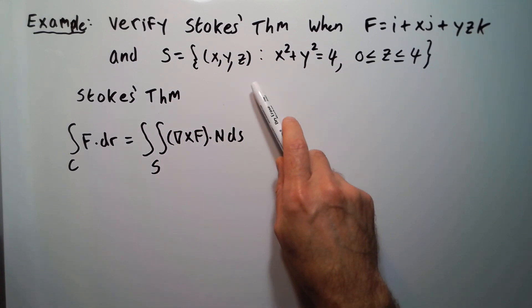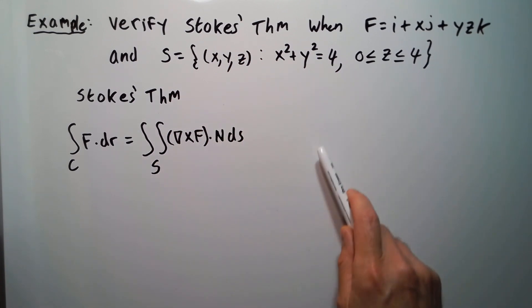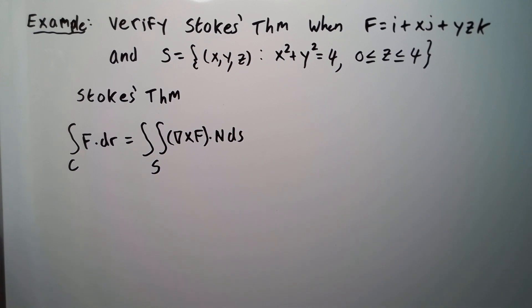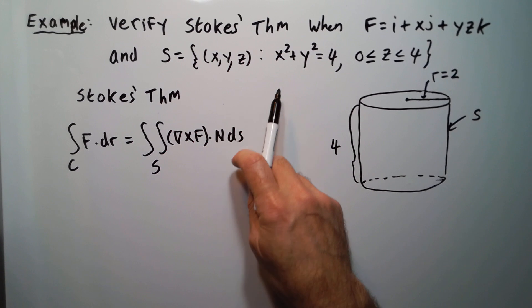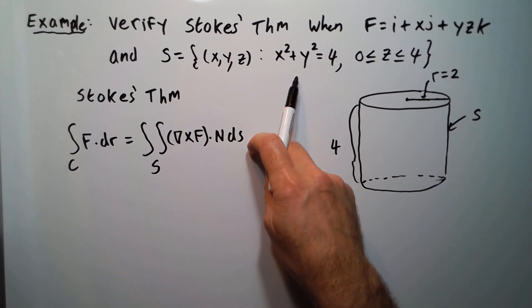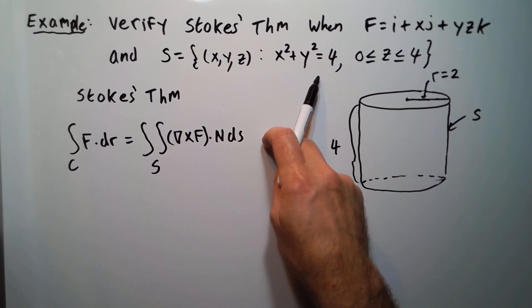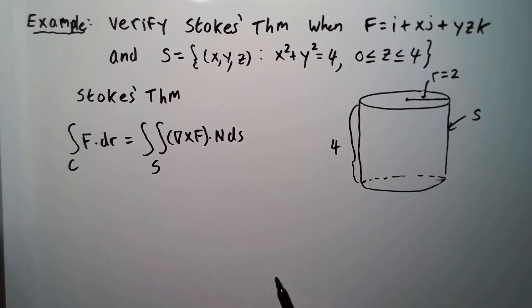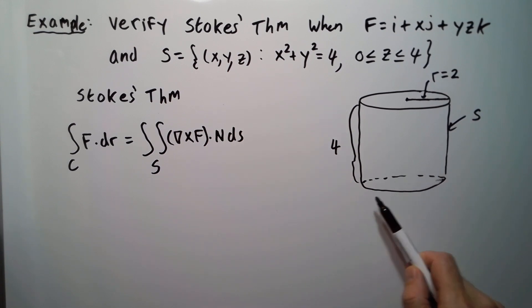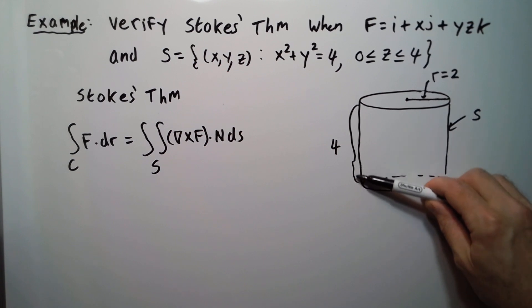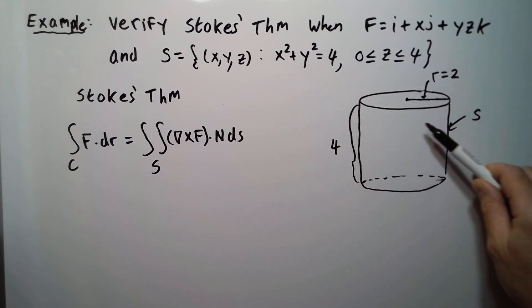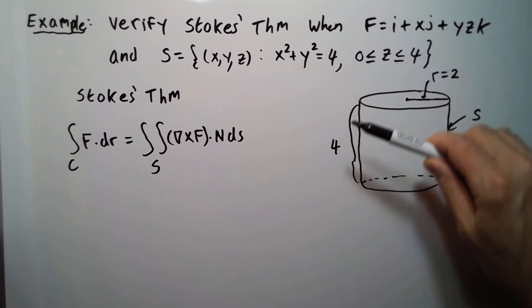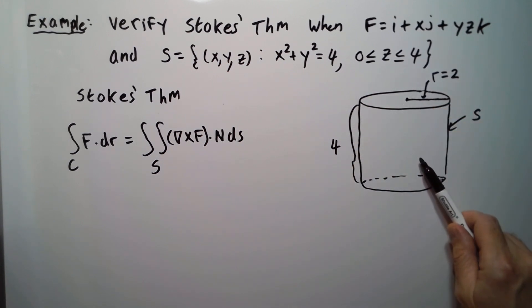Let me draw the surface now. Here's my surface. You can see that x squared plus y squared equals 4 — that's a circle of radius 2, centered at the origin. And then z goes from 0 to 4, so it's going to make a cylinder. You have these circles of radius 2 going up with z going from 0 to 4. So this would be my surface s.